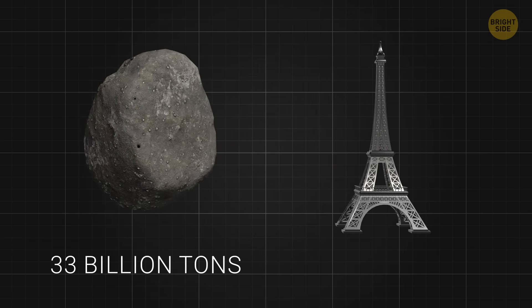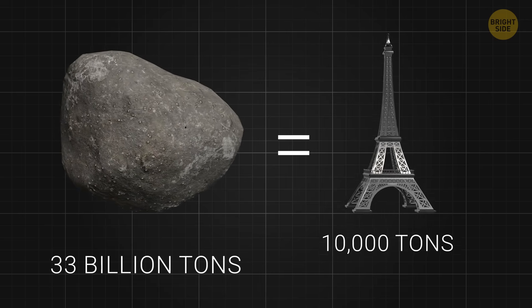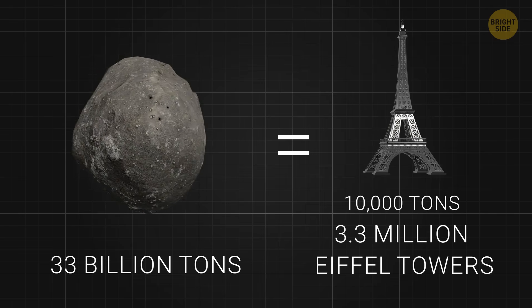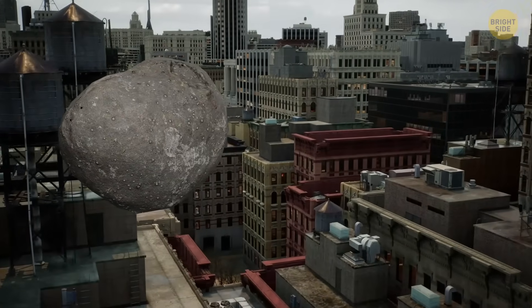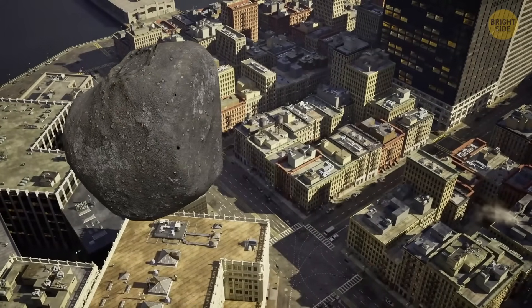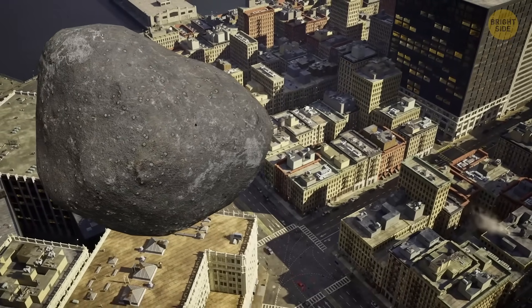The Eiffel Tower weighs around 10,000 tons. So 33 billion tons is the same as a whopping 3.3 million Eiffel Towers. And if you decide to compare the space visitor to buildings, 33 billion tons is about the same as the weight of several huge city areas made entirely of steel and concrete.